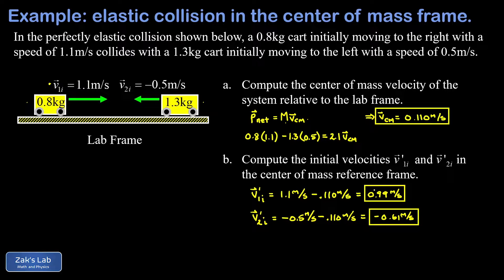There is a formal way of talking about these reference frame transformations, and a link to a video on that is posted above. But informally, for the cart moving right, we ask whether it should look slower in the center of mass frame — it should, so we subtract. For the cart moving left, it should look faster, so we also subtract. When we transform back to the lab frame at the end, all we have to do is use addition instead.